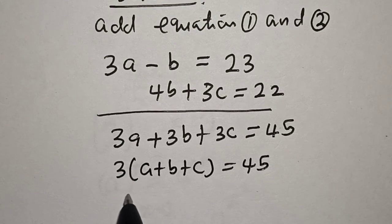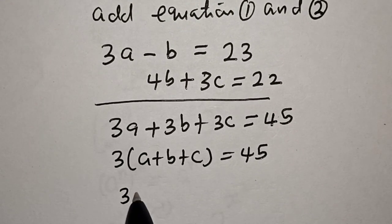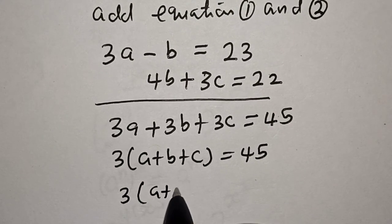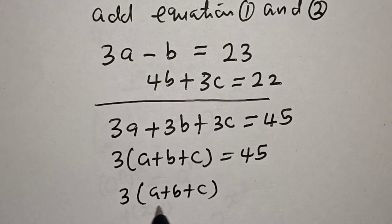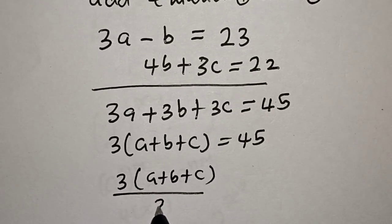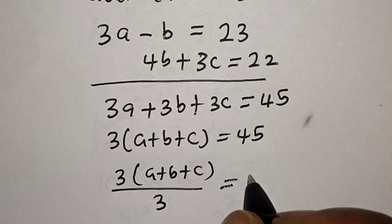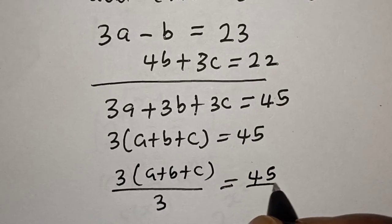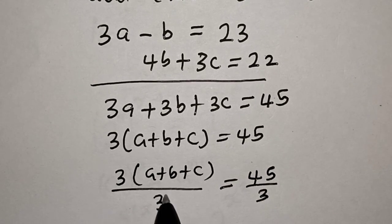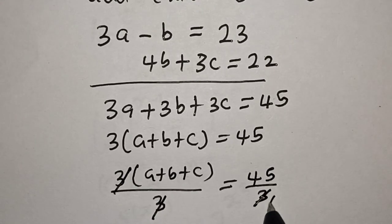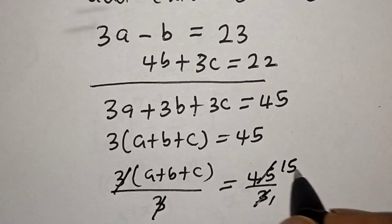So, let's divide both sides by 3. 3 into A plus B plus C over 3 is equal to 45 over 3. This one will cancel, giving us 15.